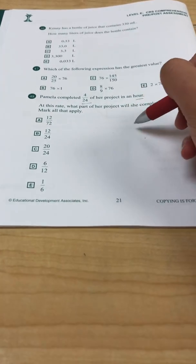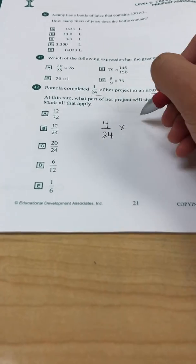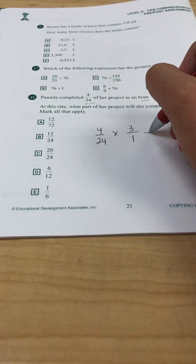So I could add it together 3 times, or I can just take 4 over 24 and multiply by 3. But 3 as a fraction is just 3 over 1.